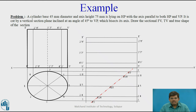The direction of observation is from the bottom of the top view. The right-hand side part of the cylinder — the right-hand side of the cutting section — is to be removed, and the left-hand side part is to be retained.